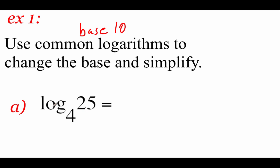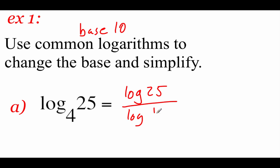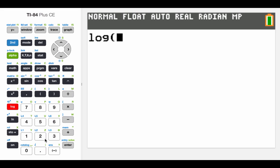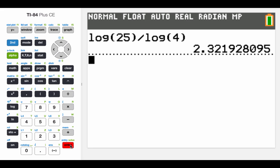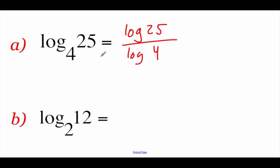In part a, we're looking at log base 4 of 25. Using that base 10 change of base property, we'd go base 10 log of 25 divided by base 10 log of 4. Now we can type this into our calculator: log of 25, close the parenthesis, divided by log of 4, close the parenthesis again, hit enter, and we get 2.322 if we round to 3 decimals.